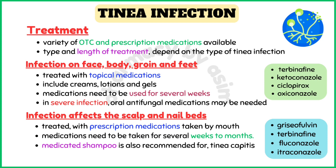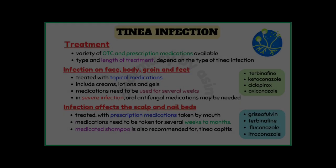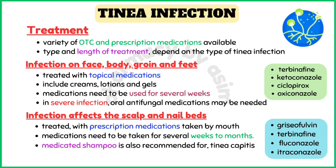If the infection is extensive, oral antifungal medications may be needed. Tinea capitis affecting the scalp and onychomycosis, known as nail fungus, usually need to be treated with prescription medications taken by mouth for several weeks to months. Examples include griseofulvin, terbinafine, fluconazole, and itraconazole. A medicated shampoo is also recommended for tinea capitis; it will not clear the infection but can prevent spread to other people.